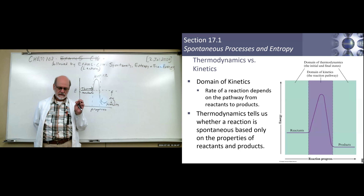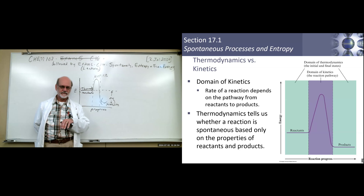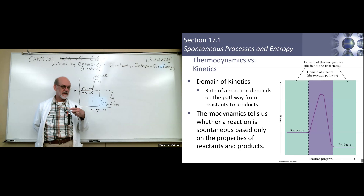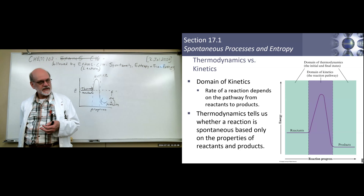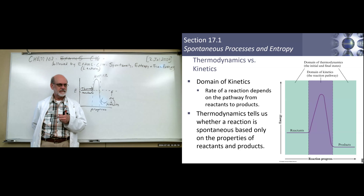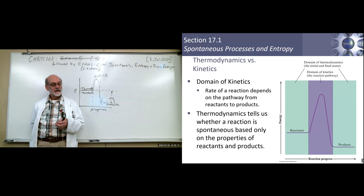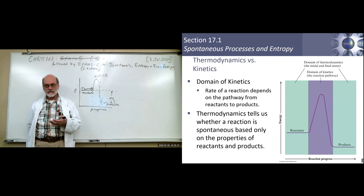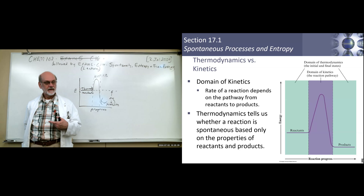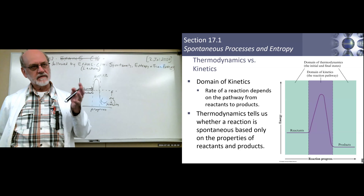Diamond is kinetically stable. My wife has a diamond on her ring finger, and it's going to be there essentially forever — thousands and thousands of years. It's kinetically stable; nothing's going to happen to it in 100 lifetimes. But thermodynamically speaking, it is unstable. In other words, if you wait long enough in an oxidizing atmosphere like air, that diamond will eventually turn into carbon dioxide.